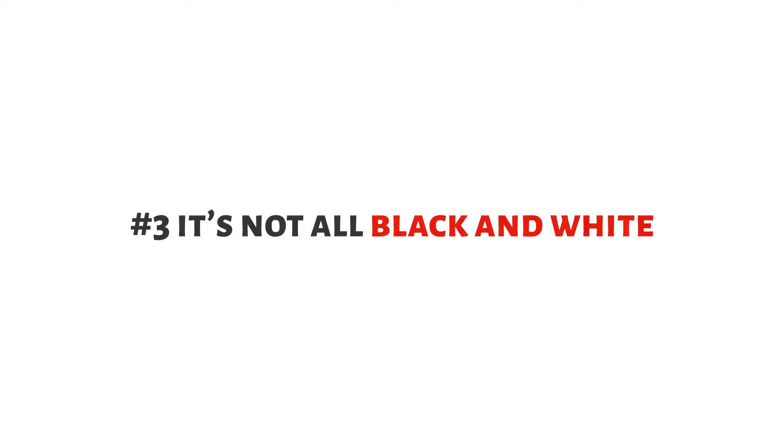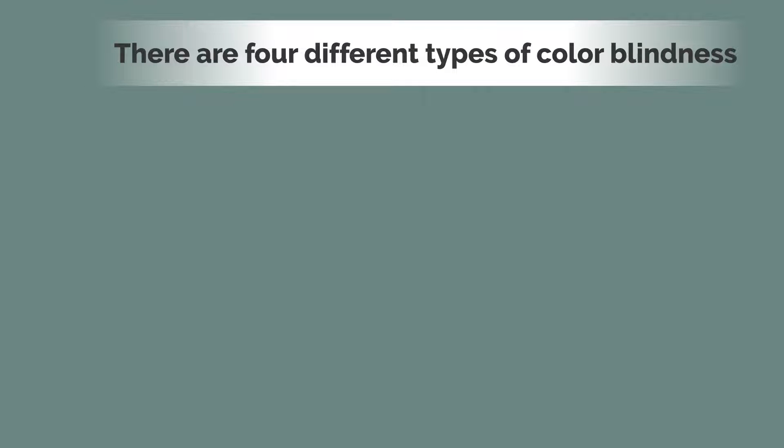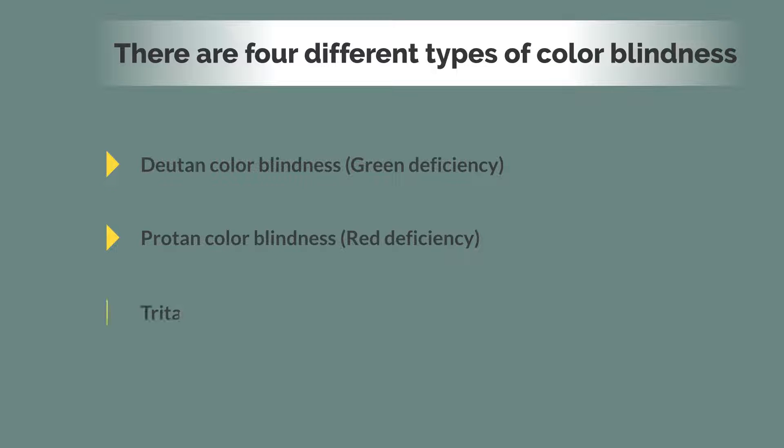Number 3. It's not all black and white. There are four different types of colorblindness. Deuteranomaly colorblindness, green deficiency. Protan colorblindness, red deficiency. Tritan colorblindness, blue-yellow deficiency.